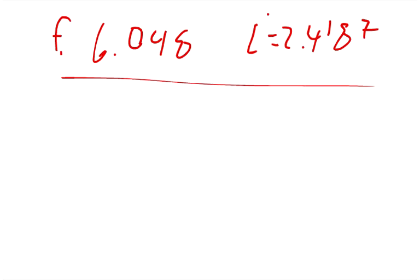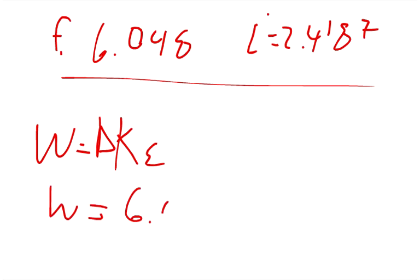And so, I know this isn't in the question, but just FYI, since you've got all your answers, you can actually calculate the work done by the student sitting in the chair by the change of kinetic energy. And so what work did he do when he pulled those weights closer to him? The work would be equal to 6.048 minus 2.4187.